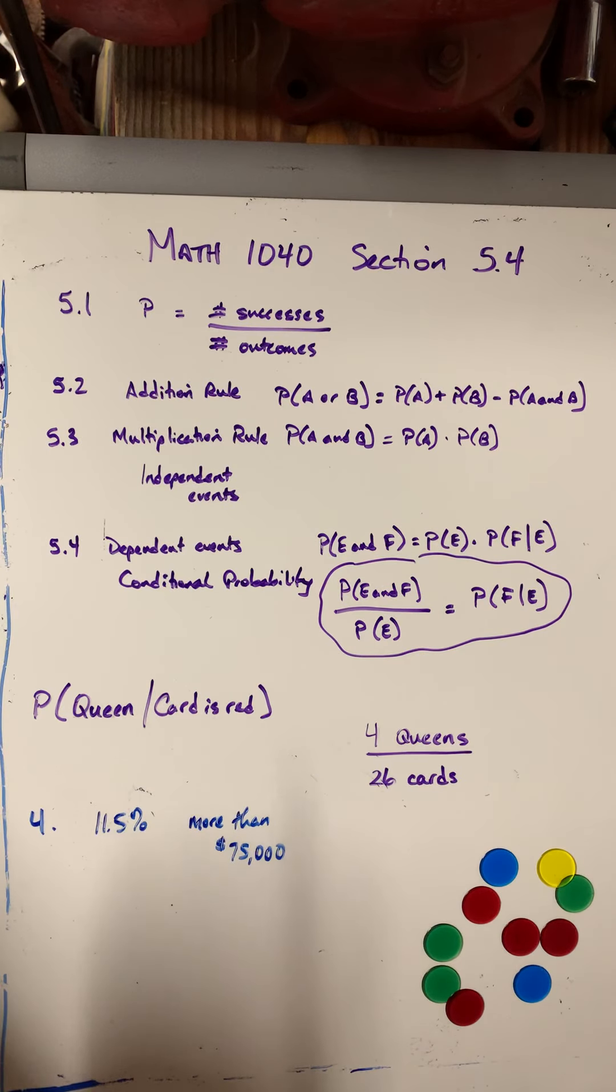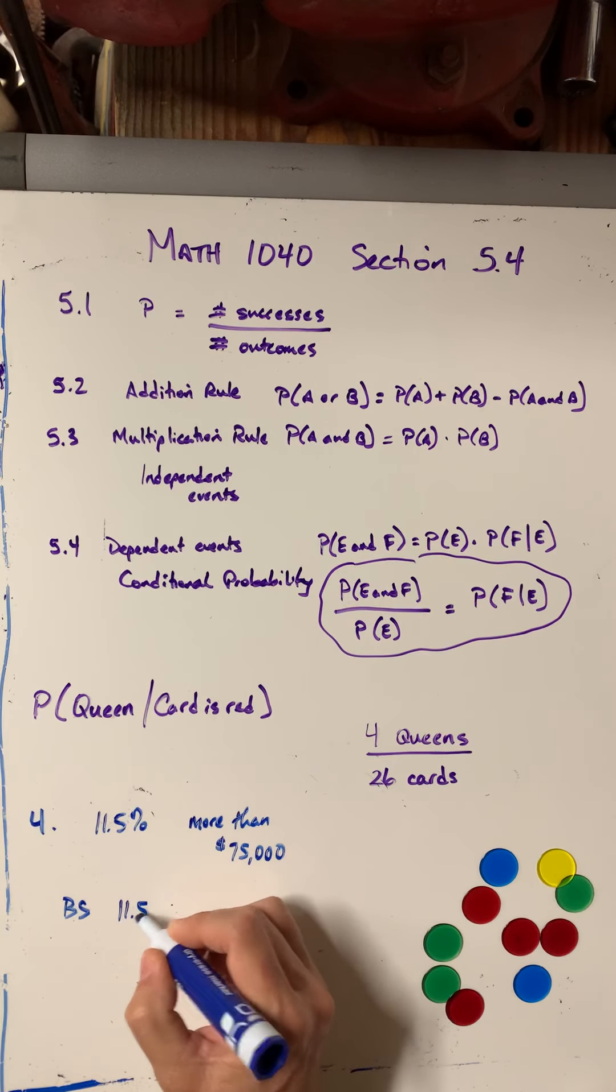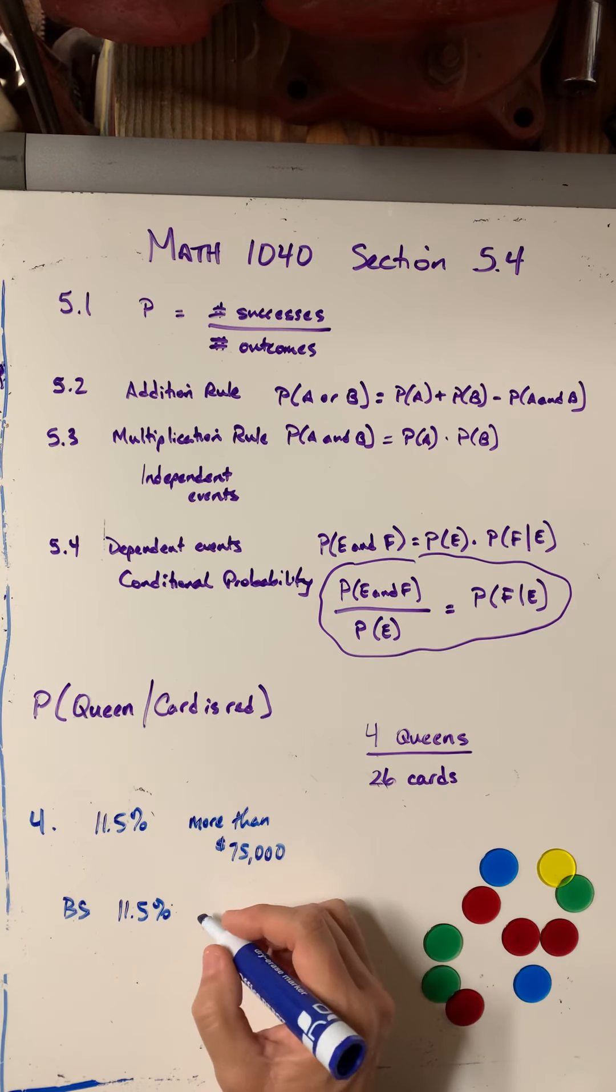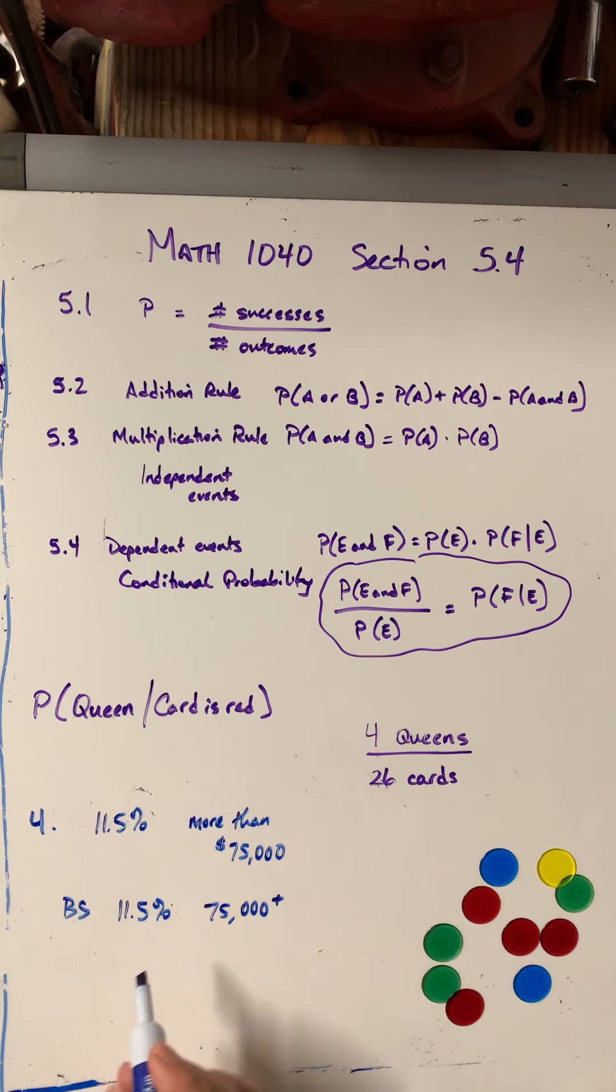And then they give you a condition. Well, the probability that a randomly selected individual in the country earns more than $75,000 per year, given that the individual has earned a bachelor's degree. So people with bachelor's degrees also is 11.5% that they earn $75,000 plus.